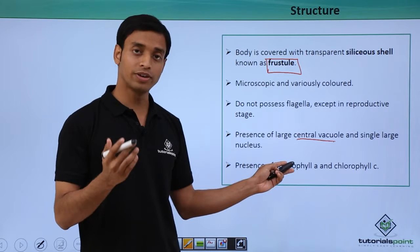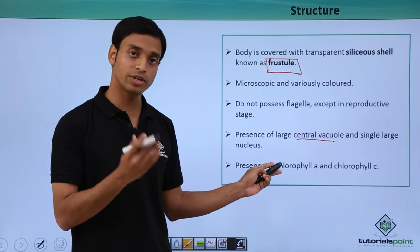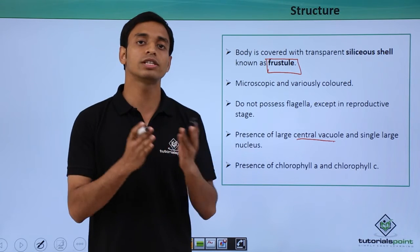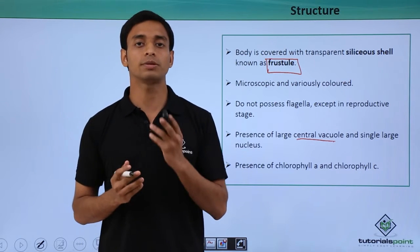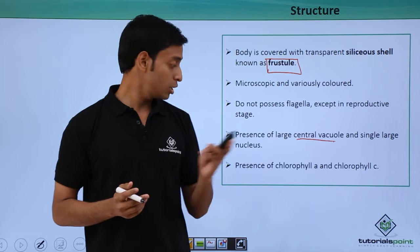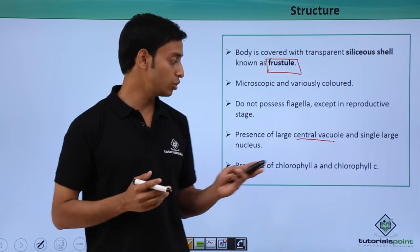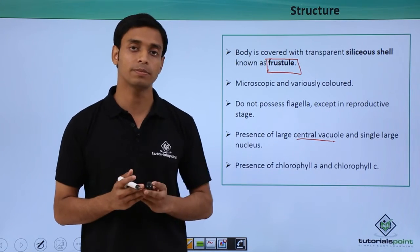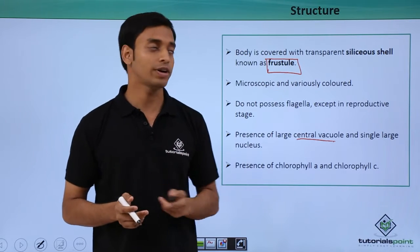They have chlorophyll A. They are photosynthetic, as we have discussed. This is a photosynthetic group, so they have photosynthetic pigments like chlorophyll. They have chlorophyll A and chlorophyll C - these are the two types of photosynthetic pigments found in chrysophytes.